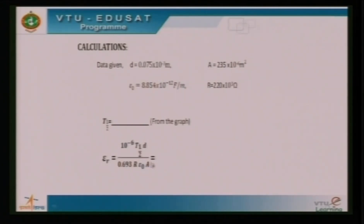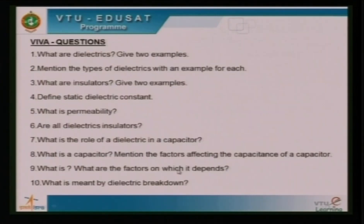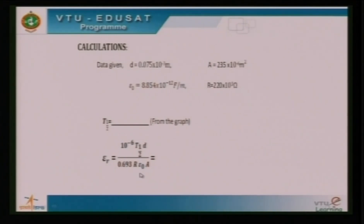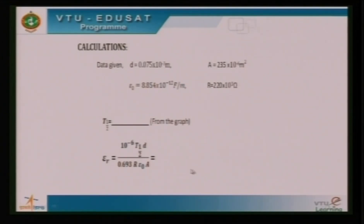We substitute that value into the formula: εr = (10⁻⁶ × t_half × d) / (0.693 × R × ε₀ × A), where t_half is the half-time, d is the distance between the capacitor plates, R is the resistance used (220 kilo-ohm), ε₀ is the absolute permittivity of free space with a value of 8.54 × 10⁻¹² farad per meter, and A is the area of the capacitor plate.